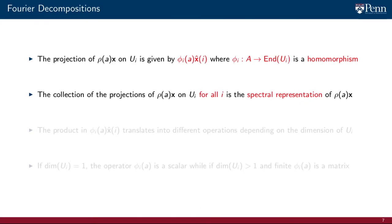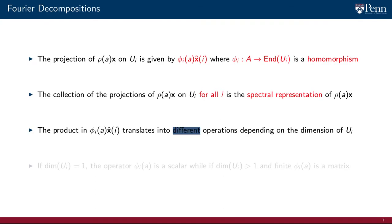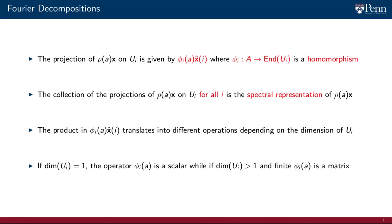The collection of the projections of the filter signal Rho of A on X onto U sub i for all i defines the spectral representations of the filter. It is worth pointing out that the action of phi sub i on X-hat of i is performed by means of different operations depending on the dimension of the spaces U sub i. In particular, if the dimension of U sub i equals 1, the operator phi sub i of A is a scalar, while if the dimension of U sub i is greater than 1 and finite, phi sub i of A is a matrix.